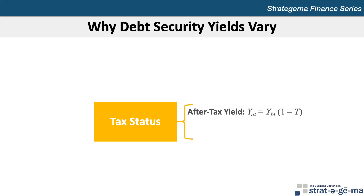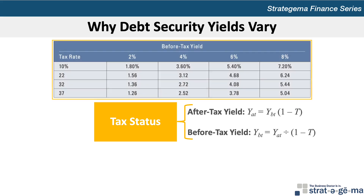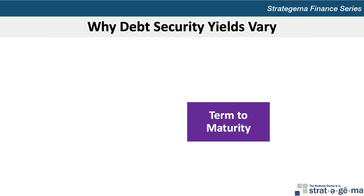Sometimes investors need to work backwards from the desired after-tax yield to determine the before-tax yield they want to earn on a security. The formula to calculate the before-tax yield is: YBT equals the after-tax yield YAT divided by (1 minus the tax rate T). A table shows some after-tax yields based on various tax rates and before-tax yields. The last characteristic affecting debt yields is the term to maturity, which defines the relationship between possible terms to maturity and the annualized yield for a debt security at any specific moment in time while holding other factors constant.